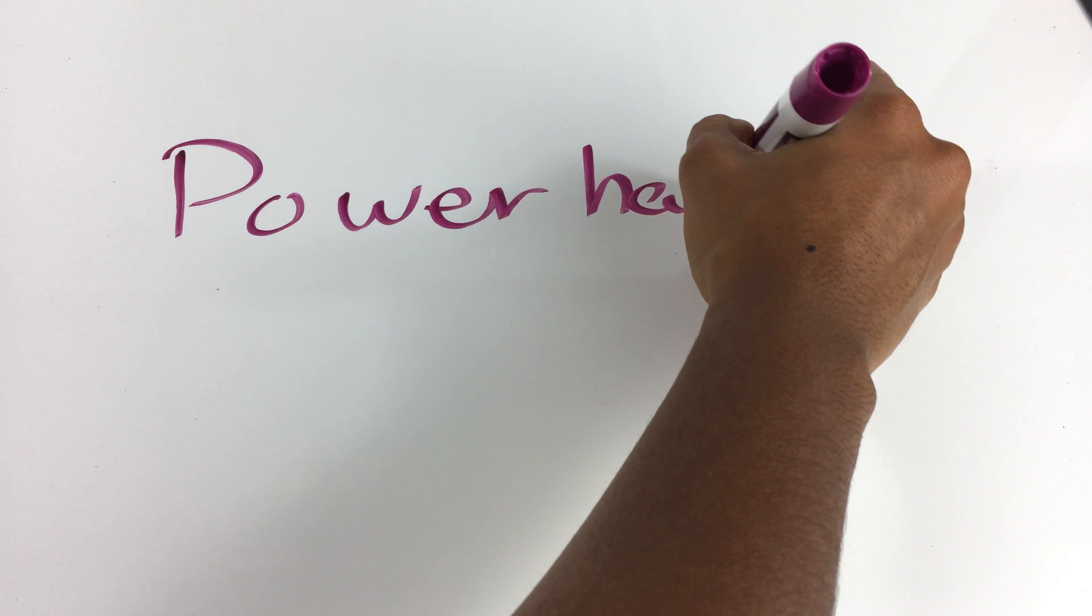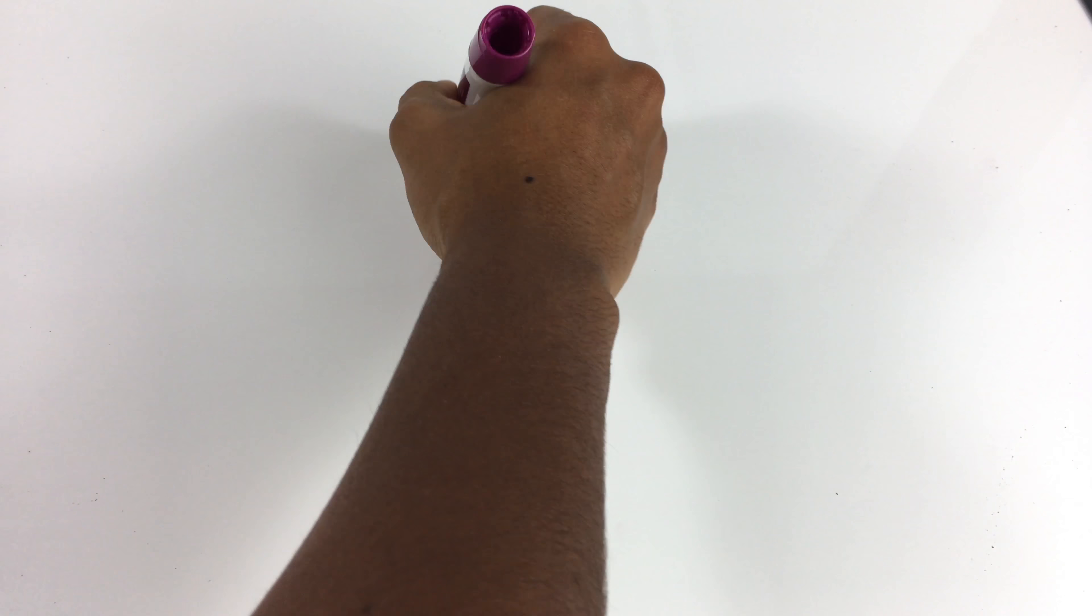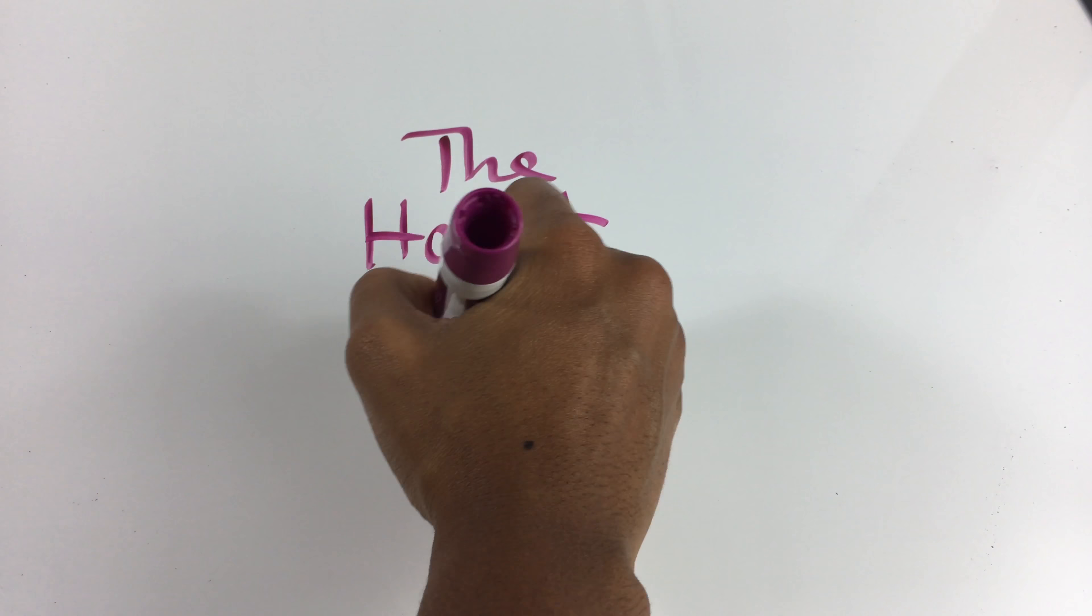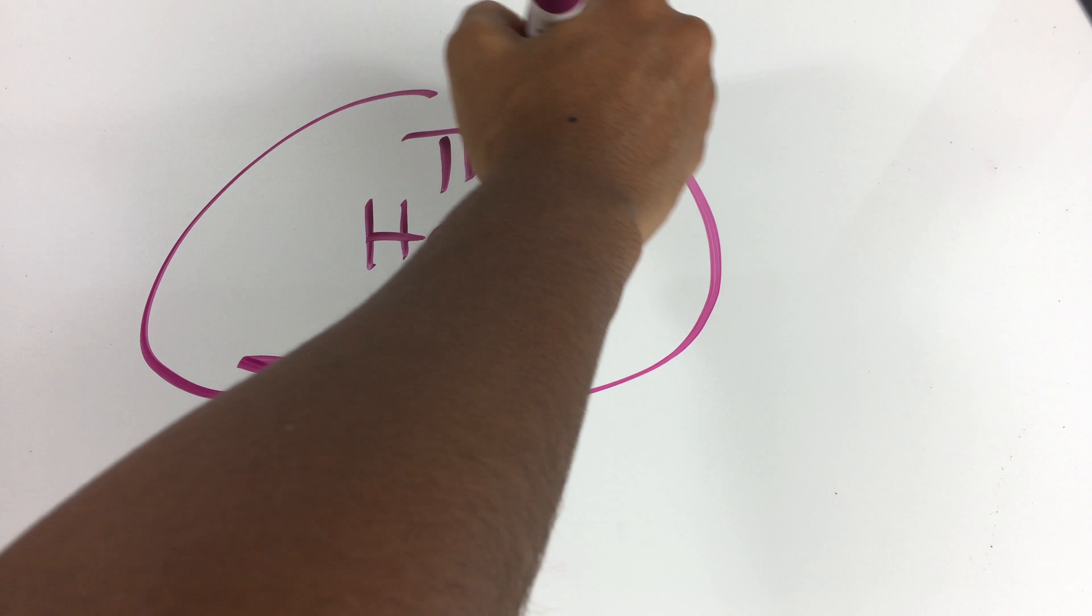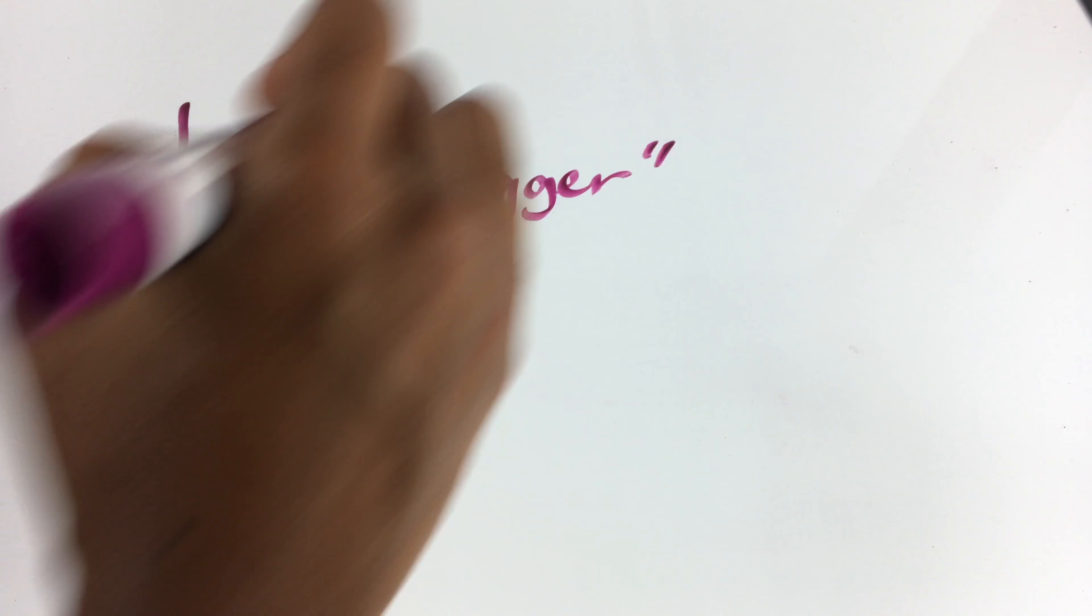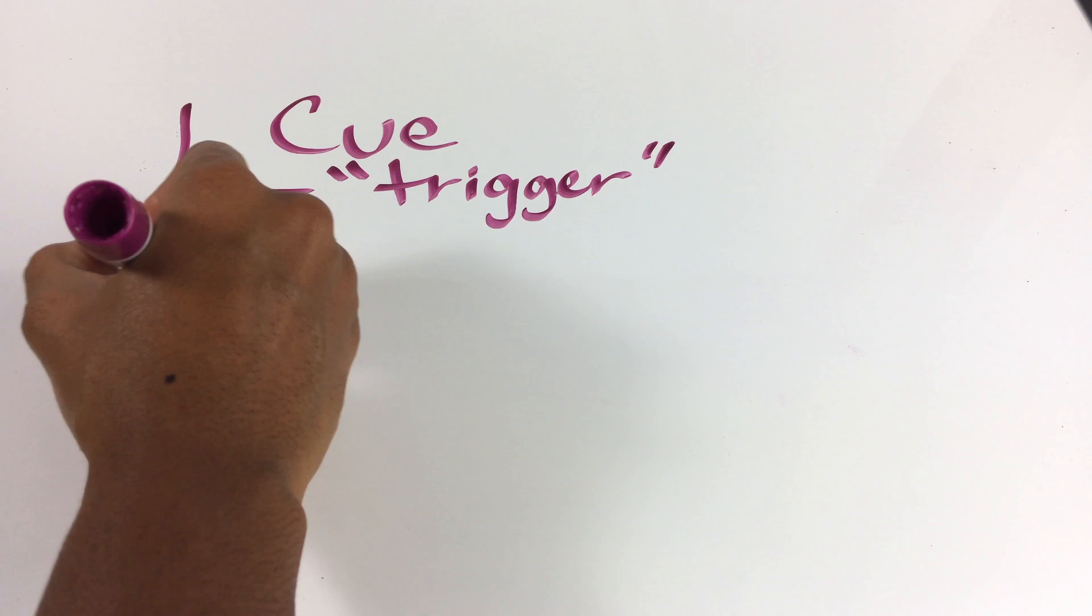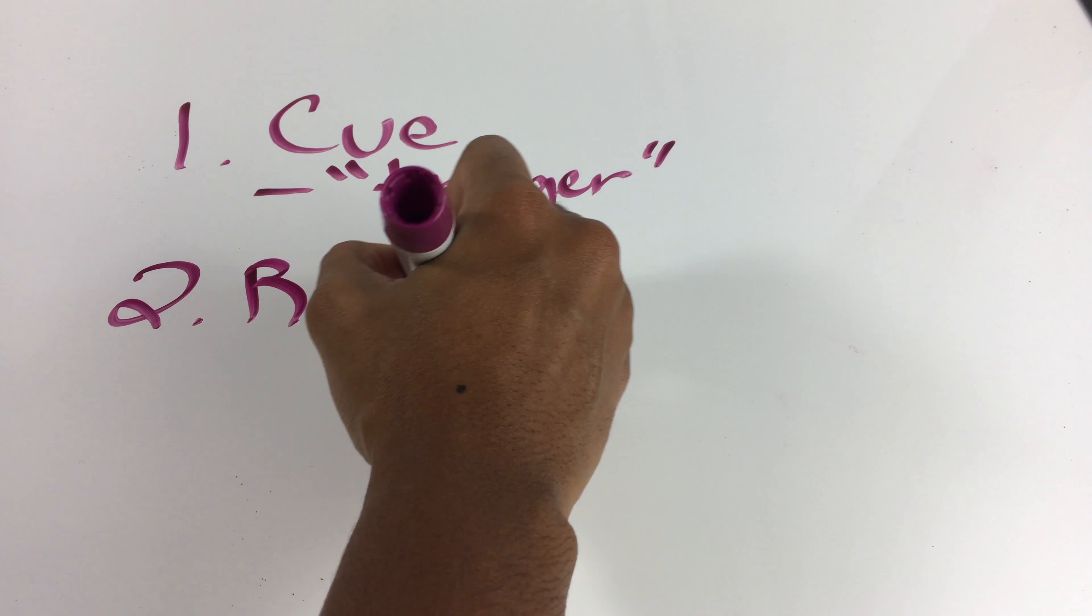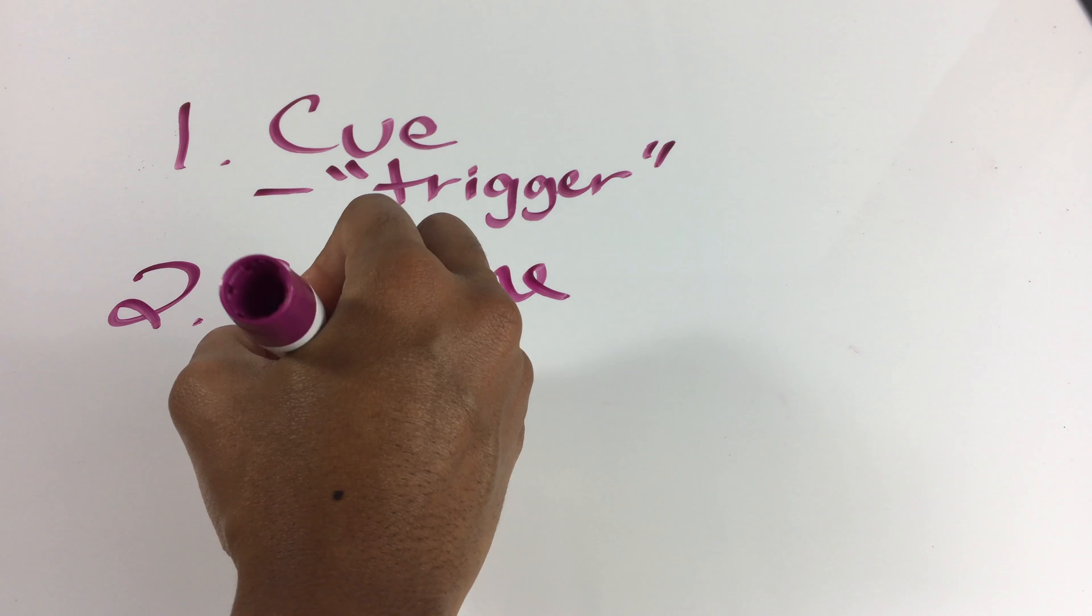Alright, today we're going to talk about power habits. When it comes to being productive, we all tend to have pretty bad habits. The first thing that typically happens is some kind of cue, something that produces the habit is the trigger, and the next thing is the routine.